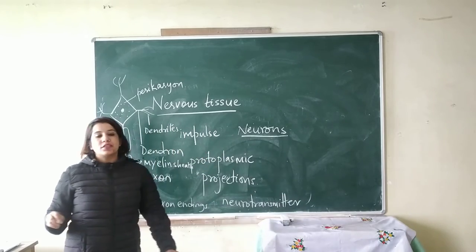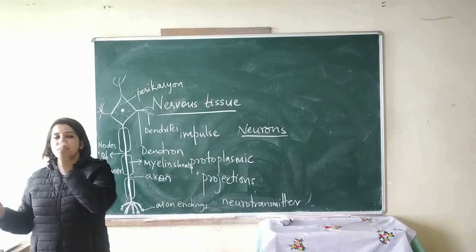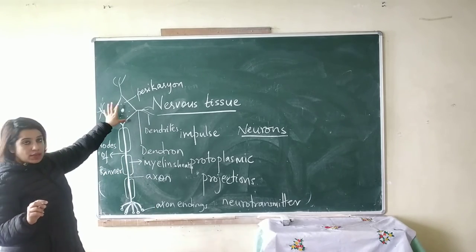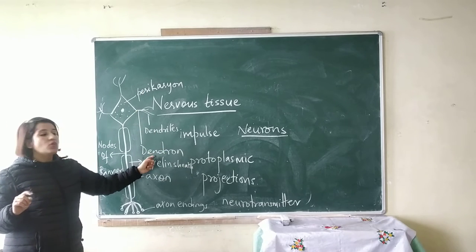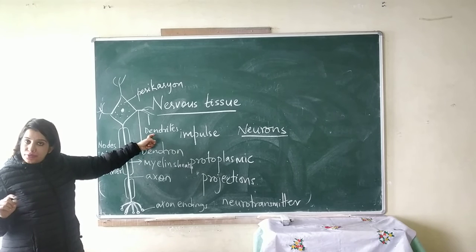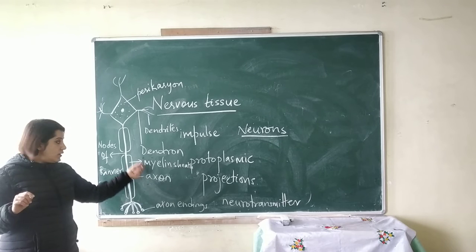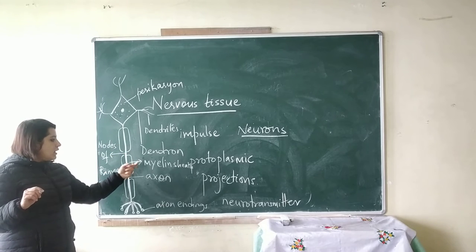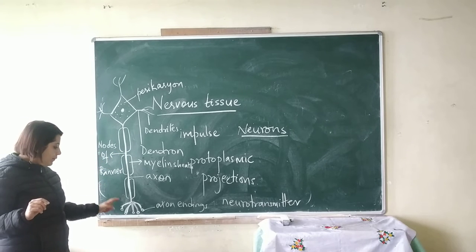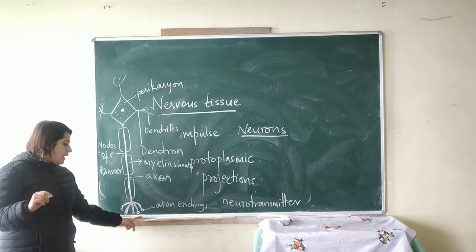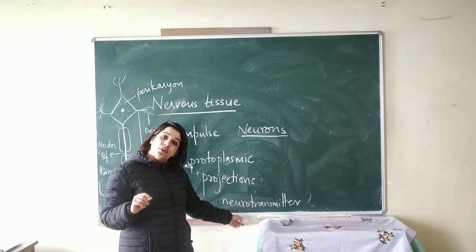The axon endings are filled with chemicals known as neurotransmitters. These neurotransmitters help in transporting impulse or messages from one neuron to another. So to summarize: there is a cell body called pericaryon, from which thread-like protoplasmic projections called dendrons arise, which branch into dendrites. One long projection is the axon, partially covered by the myelin sheath, with gaps called nodes of Ranvier, ending in axon endings filled with neurotransmitters.